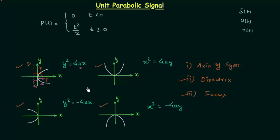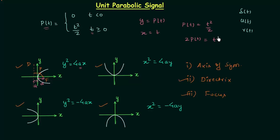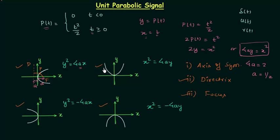Now, out of these four orientations, which one is the orientation of the unit parabolic signal? Here, y is equal to P(t) and x is equal to t. When time t is greater than or equal to 0, P(t) = t²/2, so we can write 2y = x², or equivalently x² = 4ay where 4a = 2. This means a = 1/2, and this equation is the equation of the third parabola. So the unit parabolic signal has the waveform of the third parabola with focus at distance 1/2 from the origin.